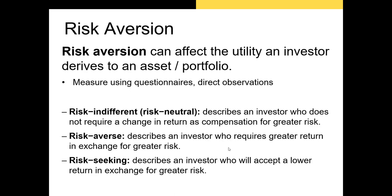When we're talking about risk aversion, what we're talking about is how much someone dislikes risk. People who are extremely risk-averse will have a higher coefficient of risk aversion and want to maintain a portfolio that has low volatility. People who are risk-neutral or risk-indifferent don't require a change in return as compensation for greater risk. Most of the investors you'll see in the real world are risk-averse, meaning they'll have a positive coefficient of risk aversion. Those who are completely risk-neutral would have a coefficient of risk aversion A equal to zero.